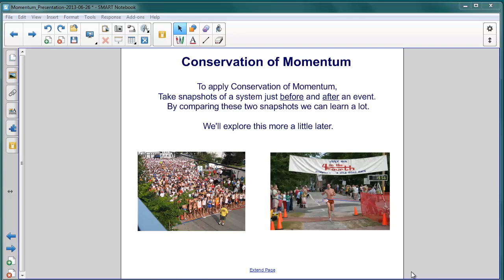Conservation of momentum is applied to figure out what the momenta or the velocities of objects were either before or after an event. So to apply it, we take snapshots of the system before and after. We get some information either before or after, a little bit of each. And with that, we're able to complete the picture of what all the objects were doing. We're going to explore that in more detail a little bit later.